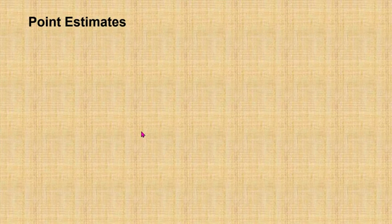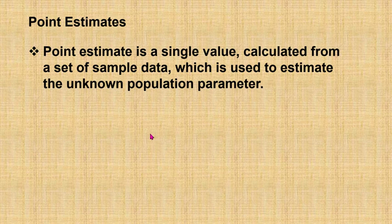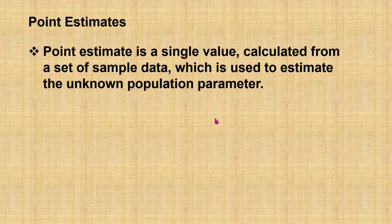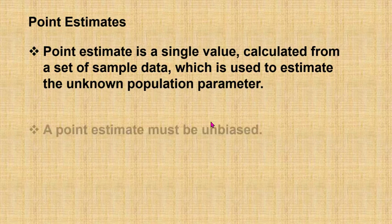We start from point estimate. What is a point estimate? A point estimate is a single value calculated from a set of sample data which is used to estimate the unknown population parameter. A point estimate must be unbiased.